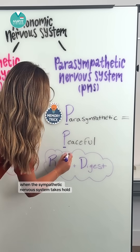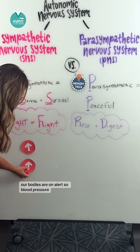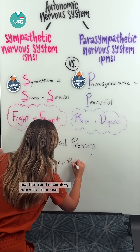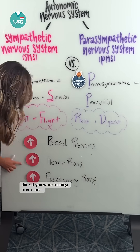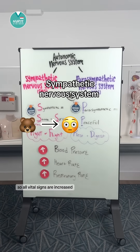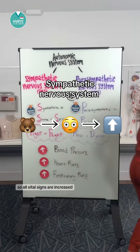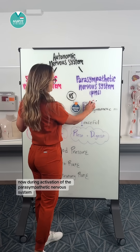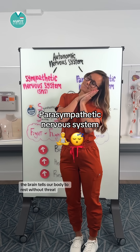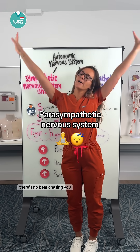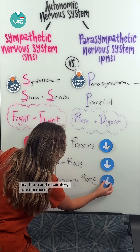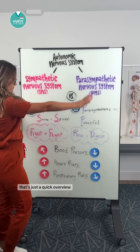When the sympathetic nervous system takes hold, our bodies are on alert — blood pressure, heart rate, and respiratory rate all increase. Think of running from a bear: your focus is survival, so all vital signs are elevated. During activation of the parasympathetic nervous system, the brain tells the body to rest. With no threat — no bear chasing you — blood pressure, heart rate, and respiratory rate decrease.